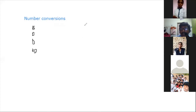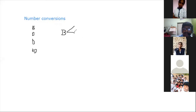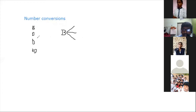Now we'll move on to number conversions — how the number conversions can be done. First, let's take binary conversions. With binary, how many conversions will happen? From binary, we can convert to octal, decimal, as well as hexadecimal.